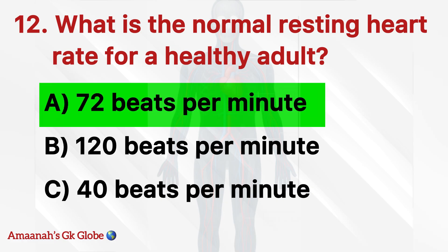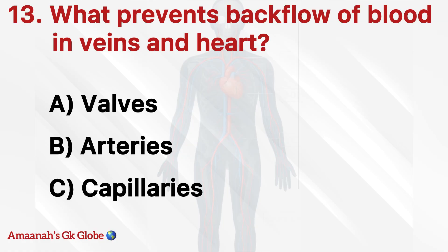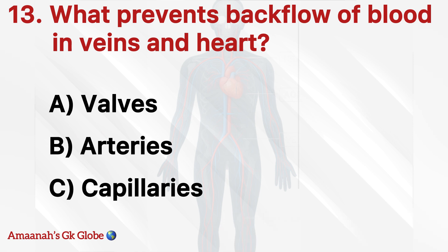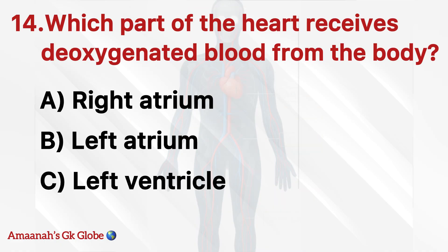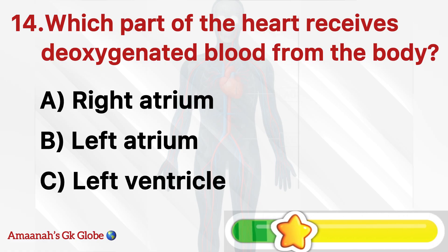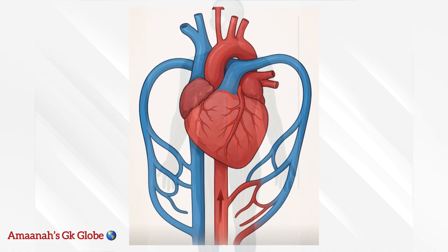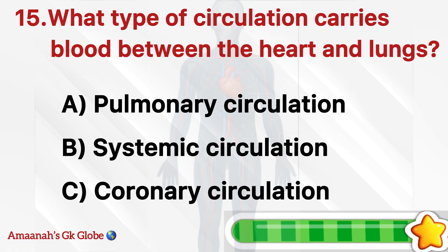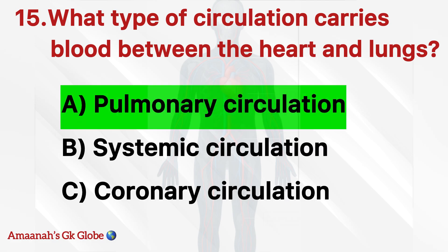What prevents backflow of blood in veins and heart? Valves. Which part of the heart receives oxygenated blood from the lungs? Right atrium. What type of circulation carries blood between the heart and lungs? Pulmonary circulation.